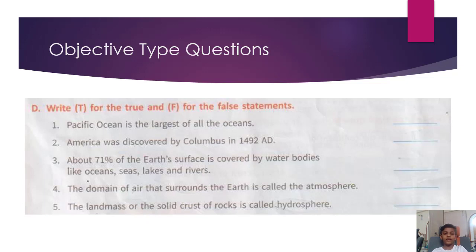D. Write T for true and F for false statements. 1. Pacific Ocean is the largest of all the oceans — True. 2. America was discovered by Columbus in 1492 AD — True. 3. About 71% of the Earth's surface is covered by water bodies like oceans, seas, lakes and rivers — True. 4. The domain of air that surrounds the Earth is called the atmosphere — True.